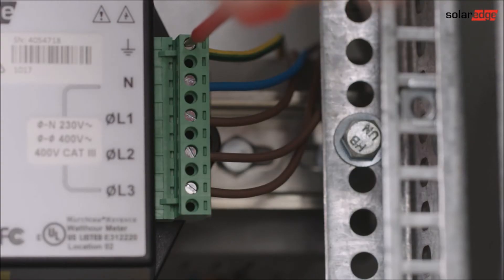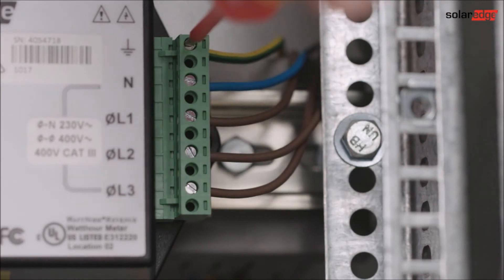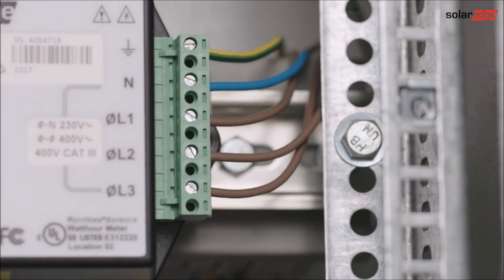In the first step we connect the AC wires to the right side of the meter. When connecting the phases don't forget to fuse those.